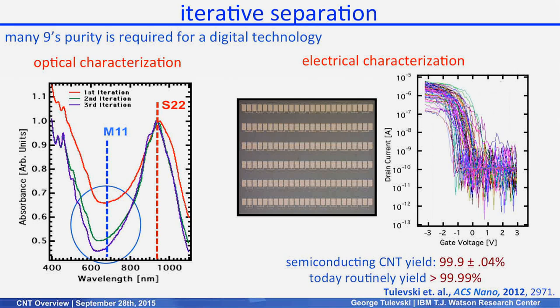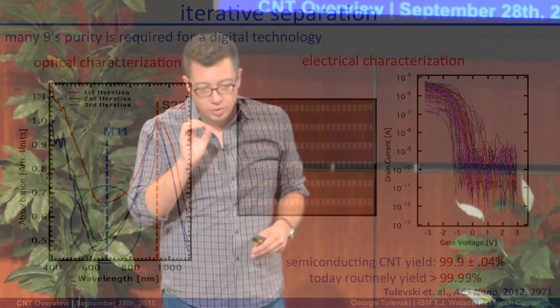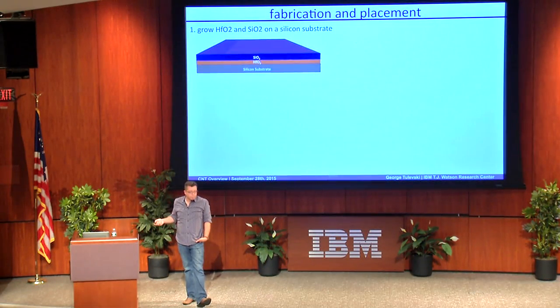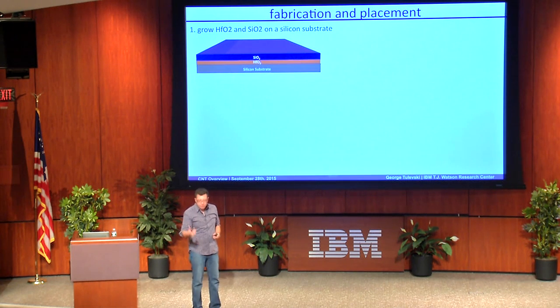Our best methods achieved one metallic tube in a thousand — 99.99% semiconducting purity, four nines — and today we can very routinely achieve four nines on a daily basis, and we're still pushing further. That's a fantastic result and better than anyone has shown. But it's not quite good enough yet: since we want to make a billion devices, we need to be in the parts-per-billion range, not parts-per-ten-thousand. There's a long way to go, but we've made a lot of progress.